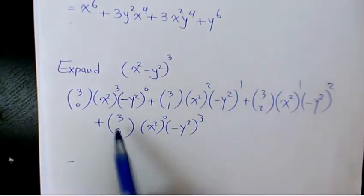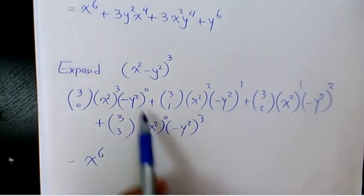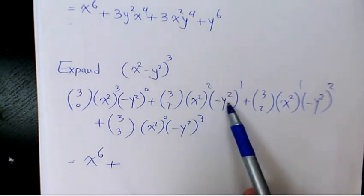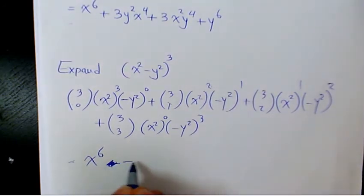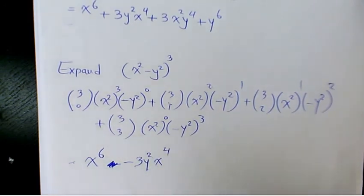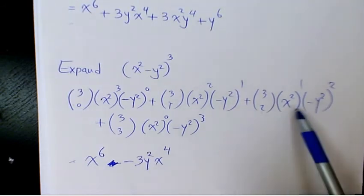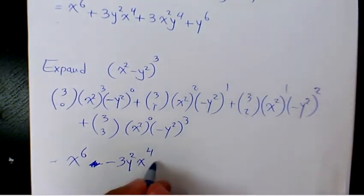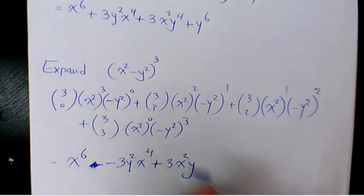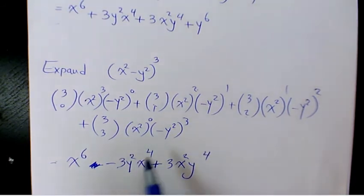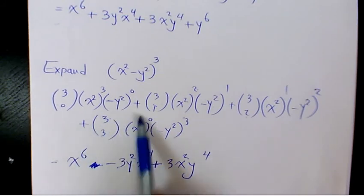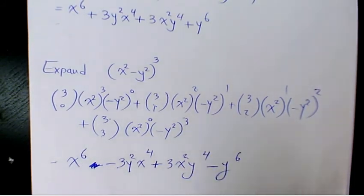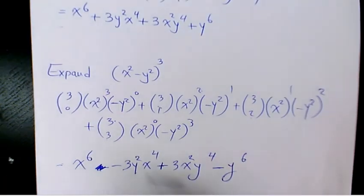The coefficients are again 1, 3, 3, 1. The first term is x⁶. The second term is 3 · (x²)² · (-y²)¹ = -3x⁴y². The third term is 3 · x² · (-y²)² — since negative times negative is positive — giving +3x²y⁴. The last term is 1 · 1 · (-y²)³ = -y⁶. So it's pretty much the same as the previous one but every other term is negative.